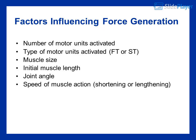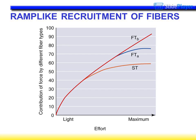Factors influencing force generation include: number of motor units activated, type of motor units activated (fast twitch or slow twitch), muscle size, initial muscle length, joint angle, speed of muscle action (shortening or lengthening), and ramp-like recruitment of fibers.